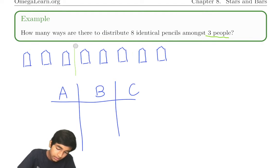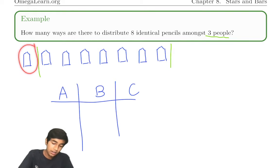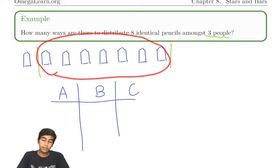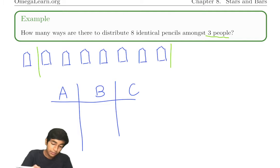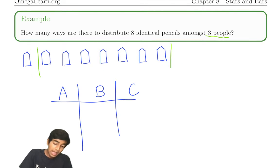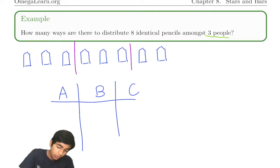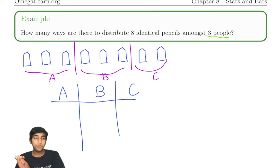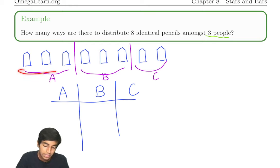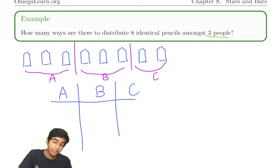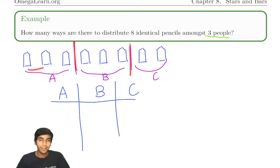For example, with the bars placed differently, there's one pencil to the left of the first bar, seven in between, and zero to the right. So the first person gets one pencil, the second gets seven, the other gets zero. For any location of the two bars, we divide them into three regions for persons A, B, C. Every unique placing of the two bars gives different numbers of pencils. So to count the number of ways to distribute, we just count the number of ways to place two bars amongst eight pencils.